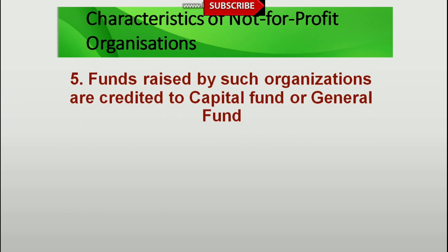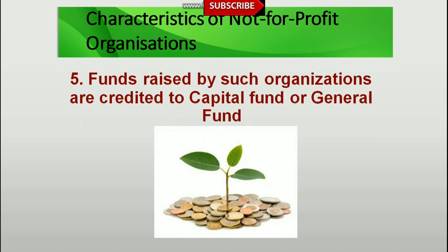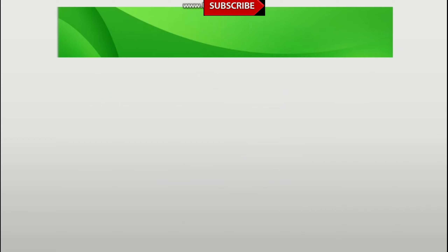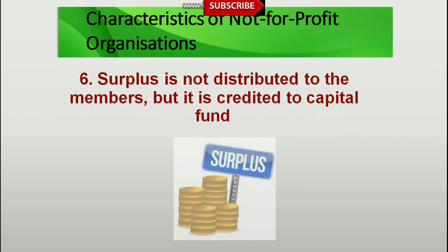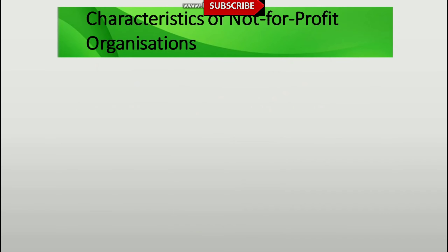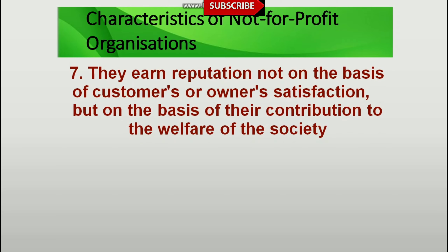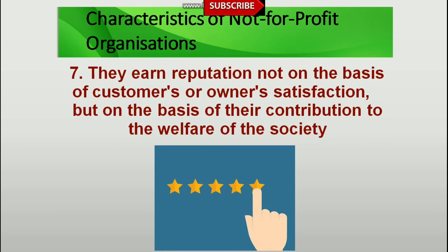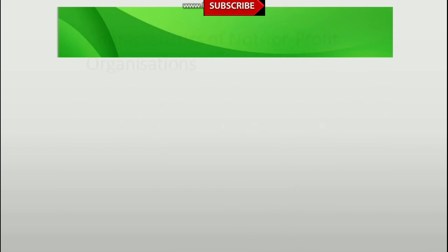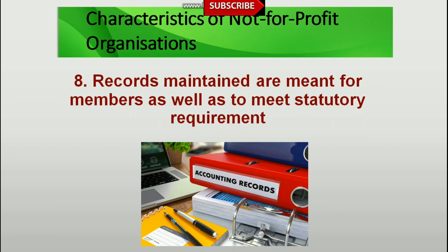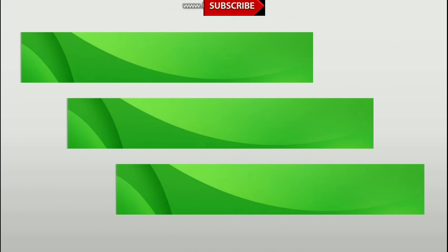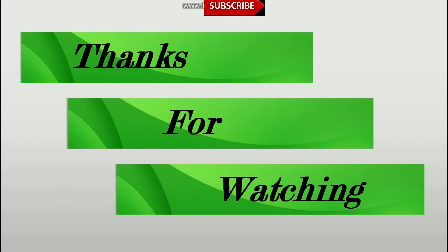Fourth characteristic — source of income: subscription from members, donations, grants, etc. Fifth characteristic: funds raised by such organizations are credited to the capital fund or general fund. Sixth characteristic: surplus is not distributed to the members but is credited to the capital fund. Seventh characteristic: they earn reputation not on the basis of customer or owner satisfaction, but on the basis of their contribution to the trust. Eighth characteristic: records maintained are meant for members as well as to meet statutory requirements.